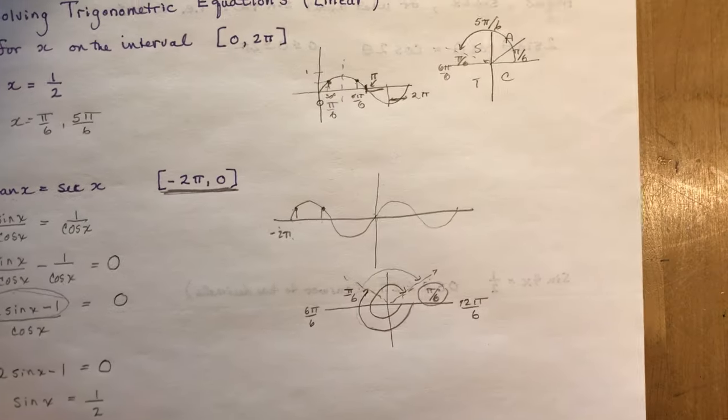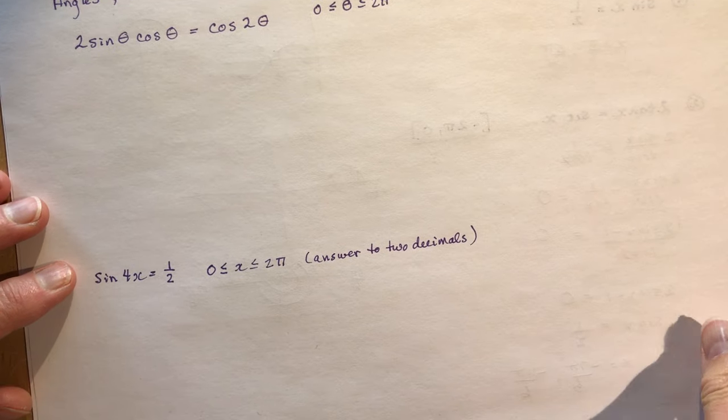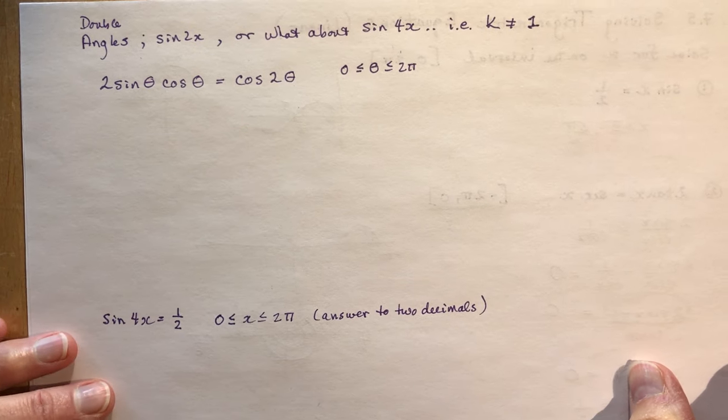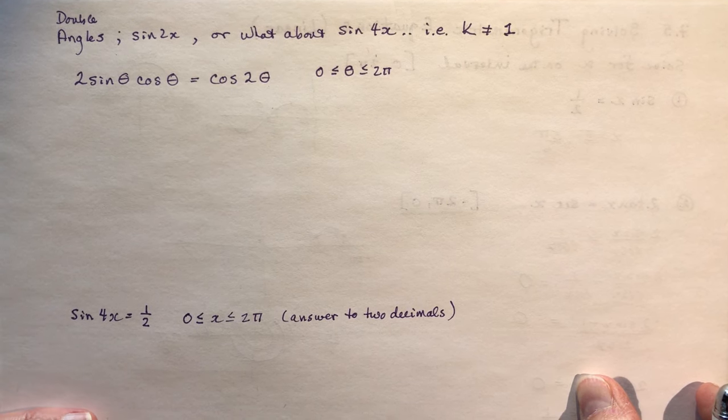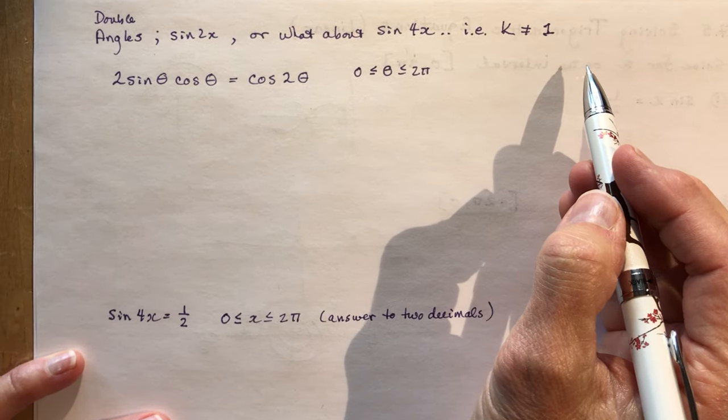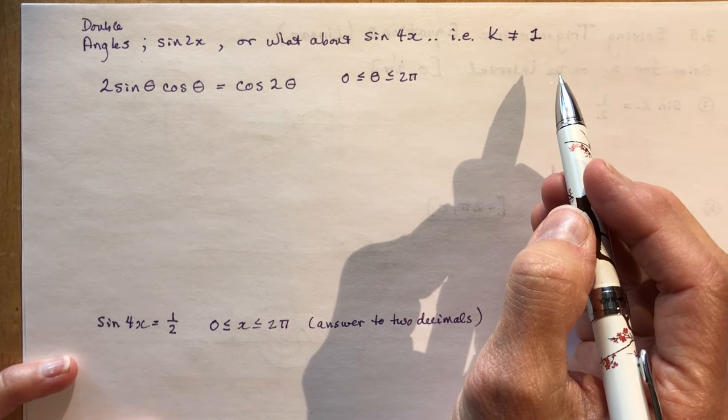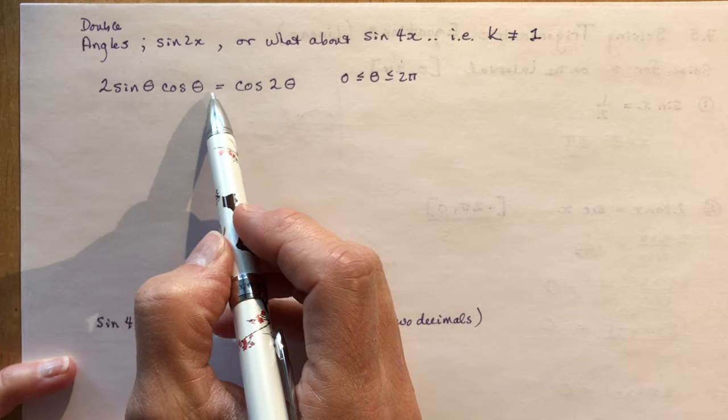Okay, let's move on to something just a little more difficult. And that's when we have something where k is not equal to 1. So in other words, when k is not equal to 1, we're changing the period of the function, right? You know that. You know that by now. You know these lessons well.